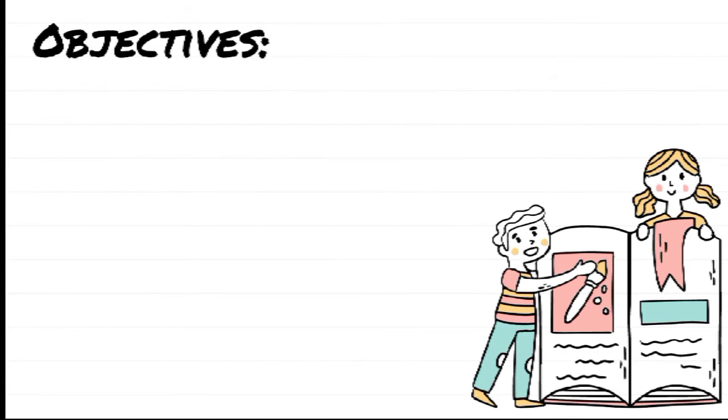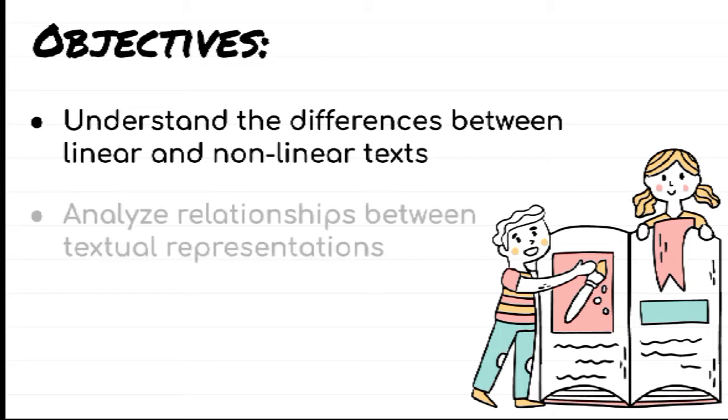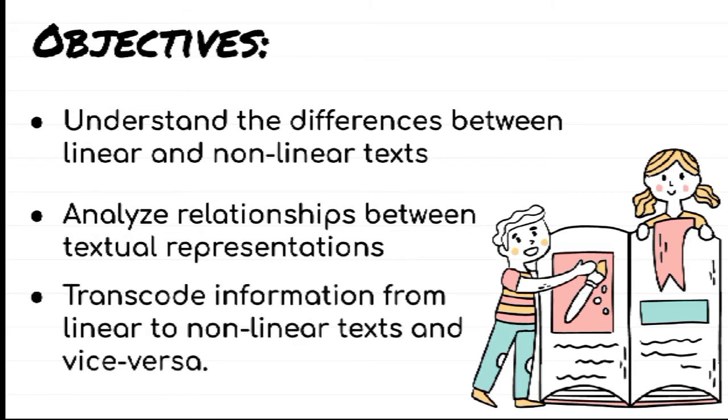Our objectives: First, is to understand the difference between Linear and Non-Linear Text. Analyze relationships between textual representations. And transcode information from Linear to Non-Linear Text and vice versa.